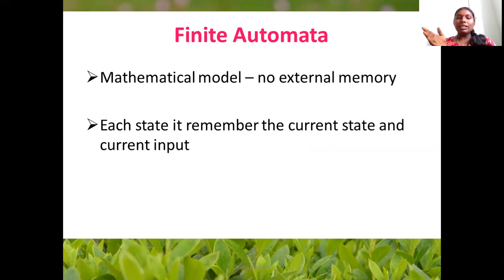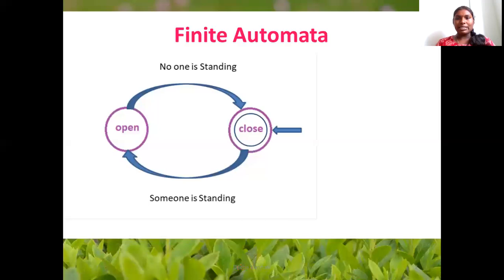There are different types of finite automata. We already have an automated door system example. We will discuss the same example. The inputs are: open and close state, no one is standing, someone is standing.